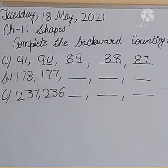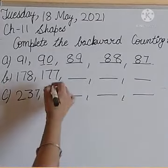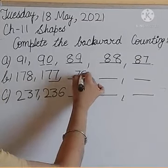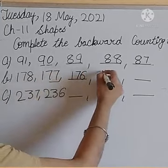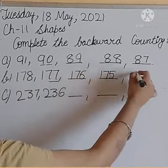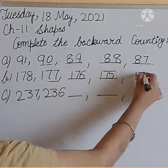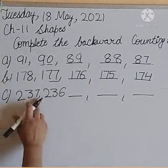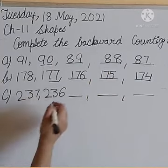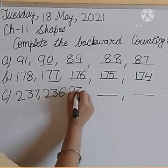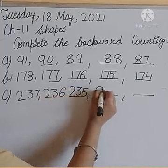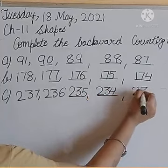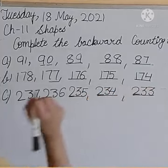Similarly, 178 and 177. You have to look at the last two digits. What comes before 77? 76 — the hundreds digit remains the same — so 176, then 175. What comes before 175? 174. Now the next one is 237 and 236. What comes before 236? 235. What comes before 234? 233.